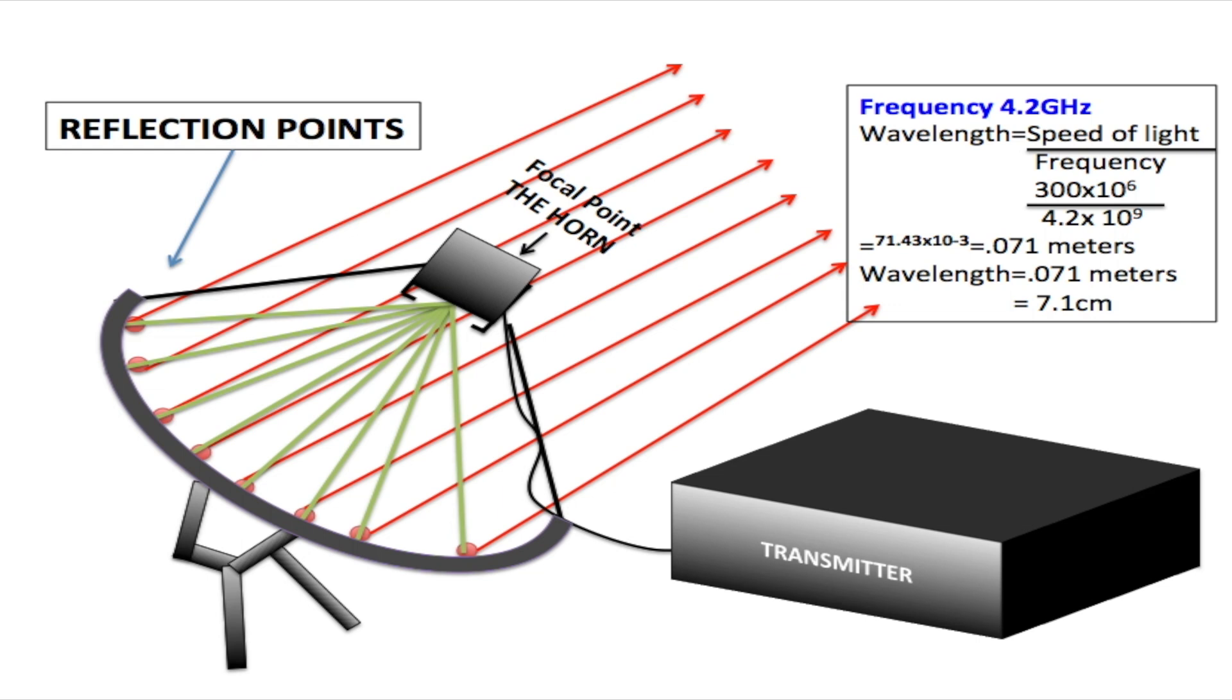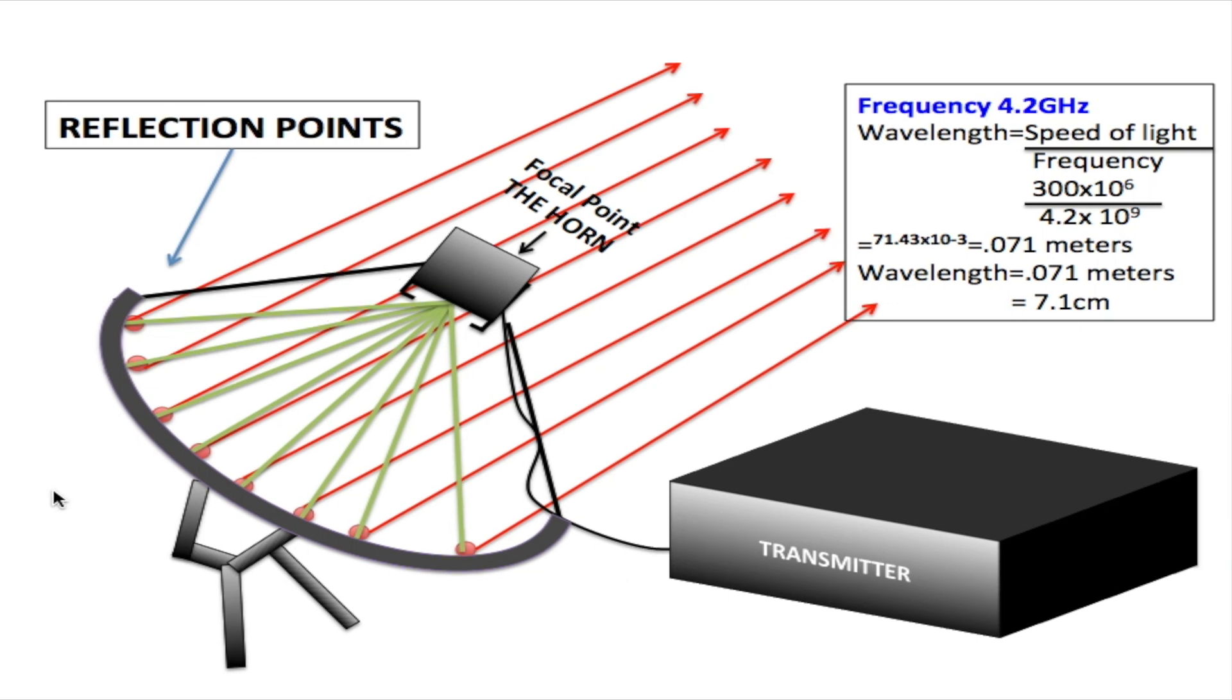Now in order for any of this to work, the first thing we have to look at is the frequency. In this case we're using 4.2 gigahertz. As the frequency gets higher, the size dish that you require will get smaller, and as the frequency gets lower, the size that you would require will be bigger. There are other things that we have to take into account as well.